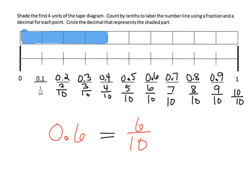The one thing I forgot to mention is circle the decimal that represents the shaded part. The decimal that represents the shaded part is right here: it is 0.4, or four tenths.